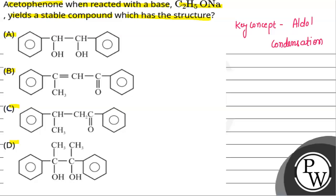Now I'll select the option. Option B has the structure: benzene ring, C equals CH, C double bond O, benzene ring, CH3. Option B is the right answer. Hope you understand, best of luck.